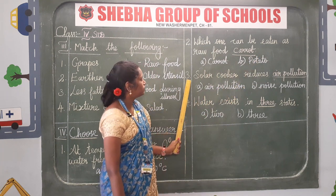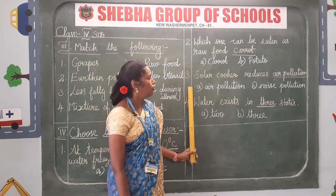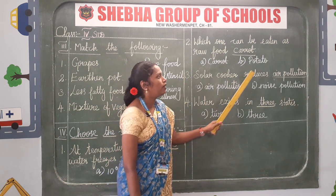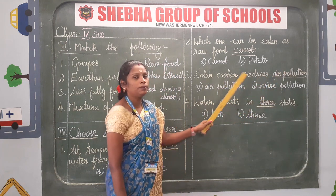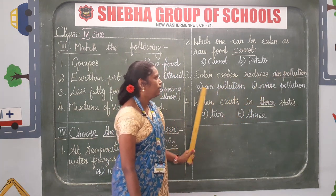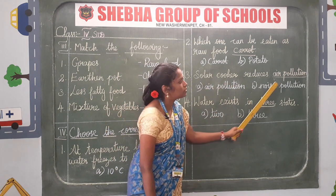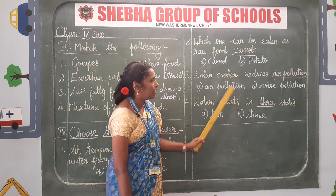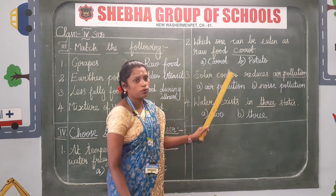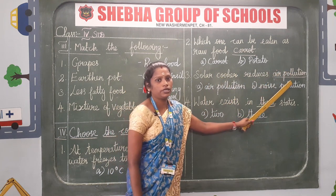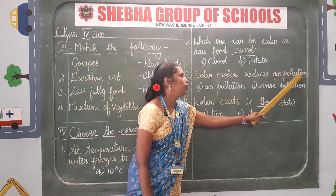Leave a line and write the third inside the margin. Solar cooker reduces blank. The options are: A — air pollution, B — noise pollution. The correct answer is air pollution. Solar cooker reduces air pollution.